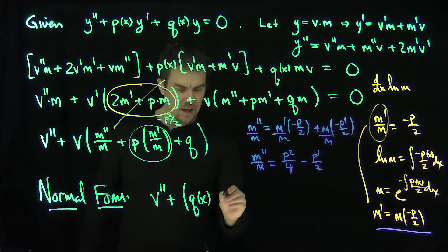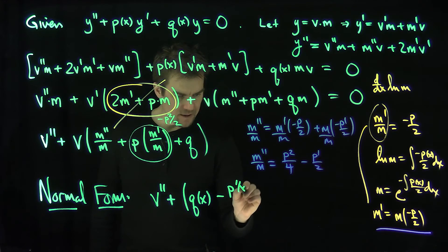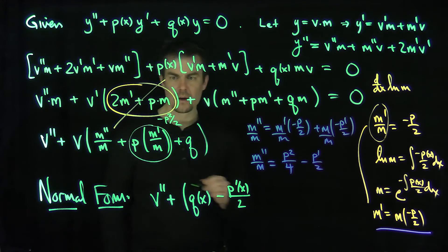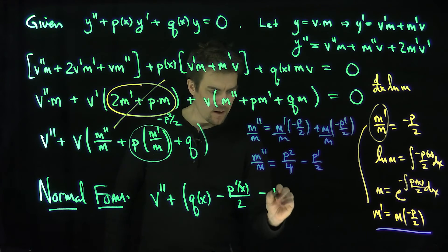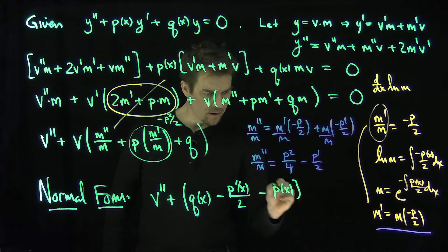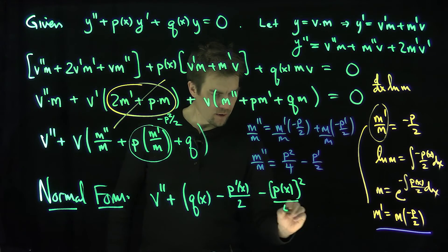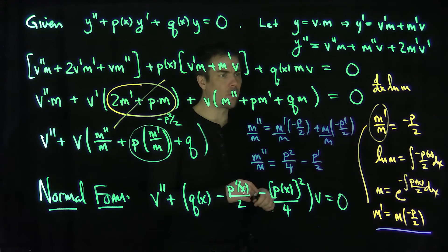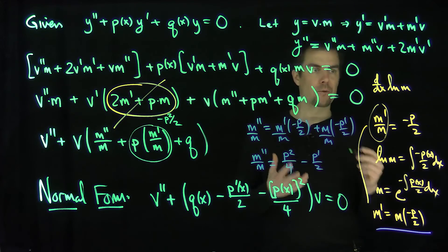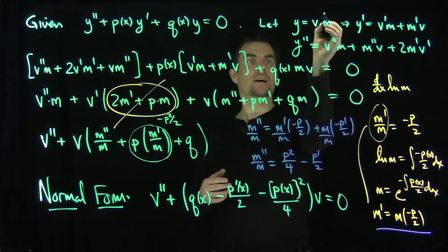and then I have a negative p prime of x over 2. And then I have a negative p squared over 2 and a positive p squared over 4. That's going to be a negative p of x quantity squared over 4 times v is equal to 0 with what relationship between my original v and y?